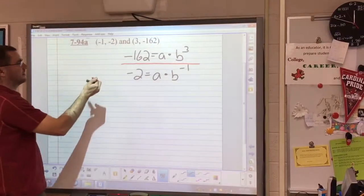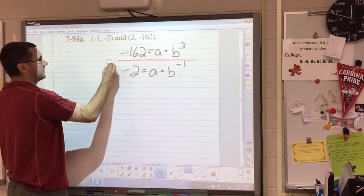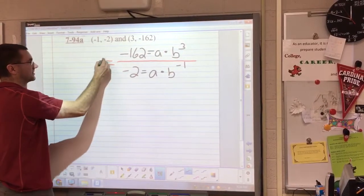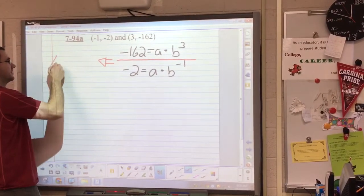So negative 162 divided by negative 2 is 81.